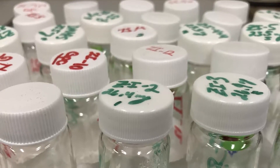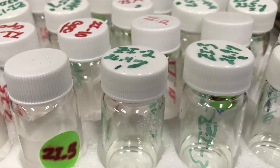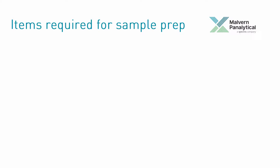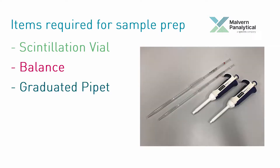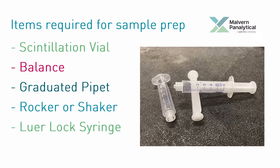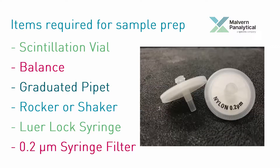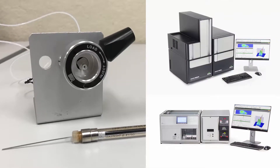In addition to ensuring sample solution homogeneity, considerations such as sample concentration and stability will be discussed. A common list of supplies for sample preparation includes a scintillation vial, a balance, a method of dispensing a known volume of dissolution solvent, a way to introduce gentle agitation to facilitate dissolution, a luer lock syringe, and a syringe filter. While the preparation method described here is applicable for both manual injector and autosampler systems, this demonstration will place the final sample solution into an autosampler vial.